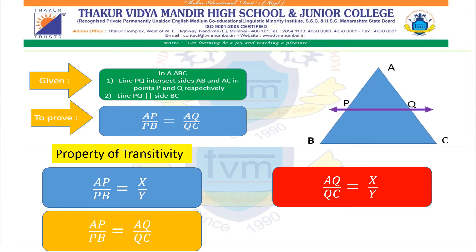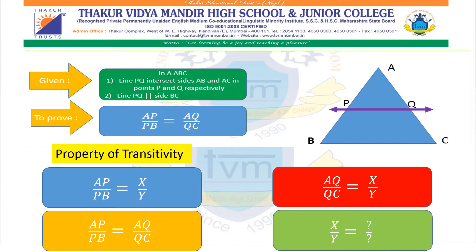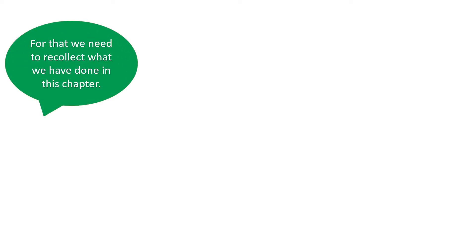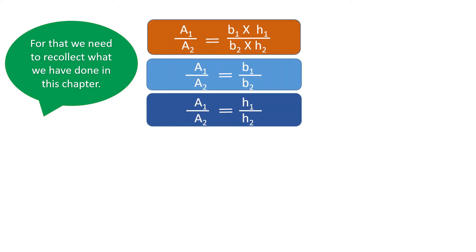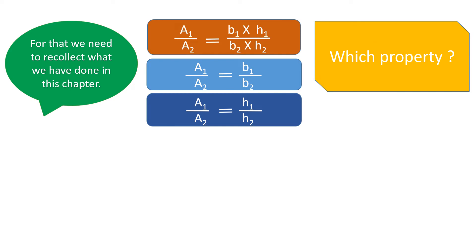Now we need to think: what would X/Y be? For that we recollect the properties related to the ratio of areas of two triangles that we covered in this chapter. You can see three properties on the screen. Which property will we be using? Think about what AP and PB can be — can it be (B1 × H1)/(B2 × H2), or B1/B2, or H1/H2?